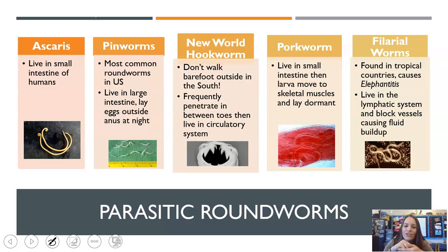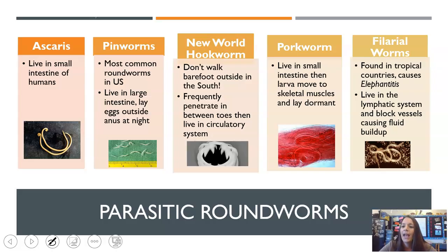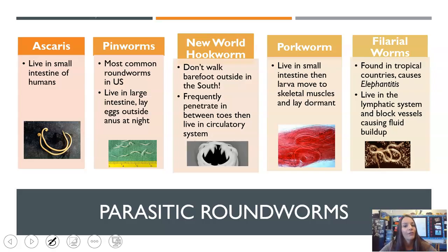Hookworms bore into your feet, often between your toes, and get into your blood and circulatory system. Porkworms are in pork — if you don't cook pork thoroughly, you can ingest eggs or larvae inside the skeletal muscles of the pork, so undercooked pork can expose you to porkworms. Lastly, filarial worms are found in tropical countries and cause something called elephantiasis. They live in the lymphatic system, block your vessels, and cause fluid buildup, resulting in severely swollen limbs — which you should look up if you're curious.